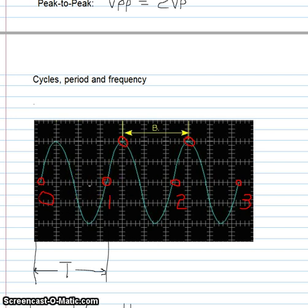Associated with a cycle is the period which is represented by the letter T. The period of a waveform is the time it takes to complete one cycle and is measured in seconds.